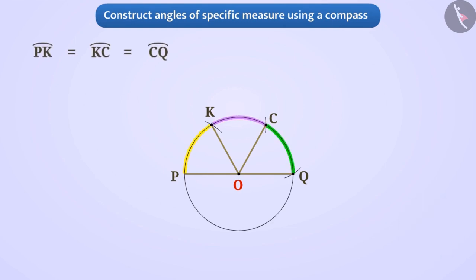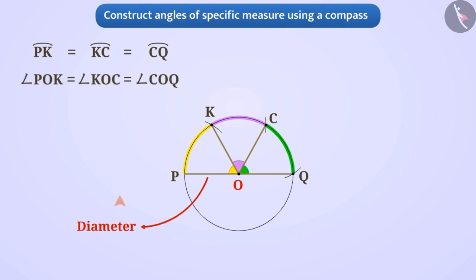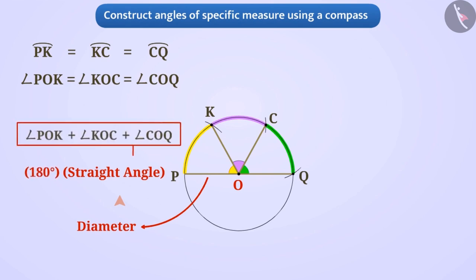Here all three arcs are equal, so the angles forming them are also equal. The diameter represents a straight angle of 180 degrees, and it is also the sum of these three equal angles. So the measurement of each angle will be 180 degrees divided by 3, which equals 60 degrees.